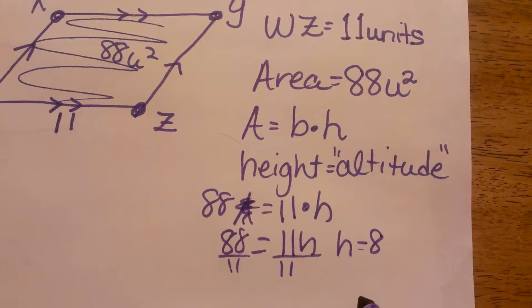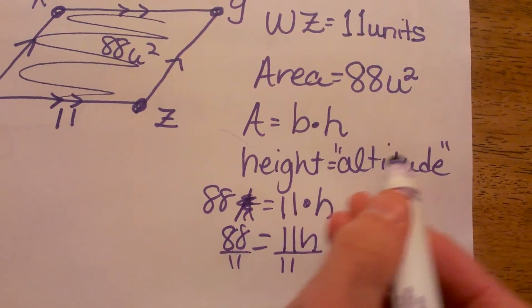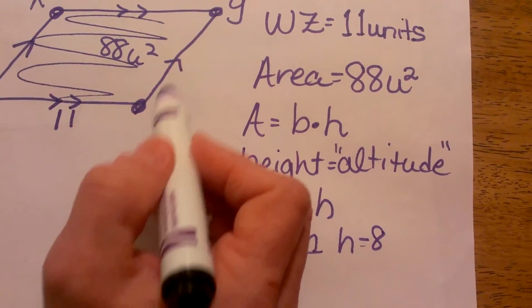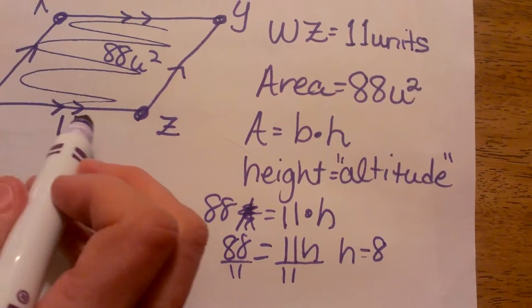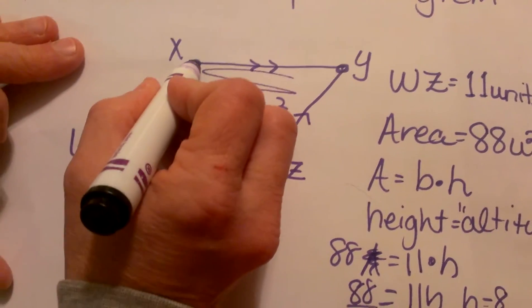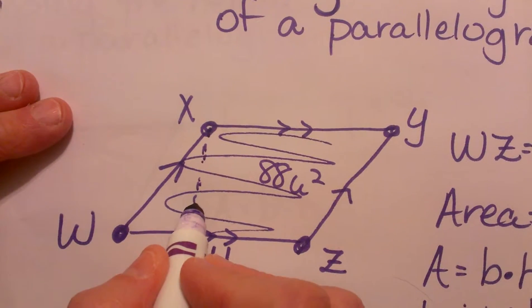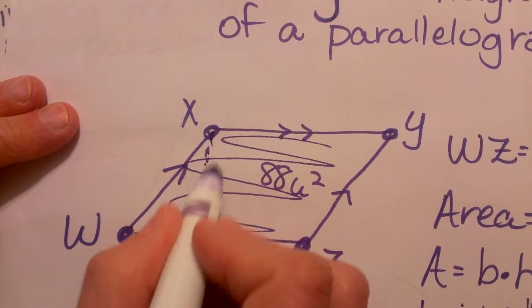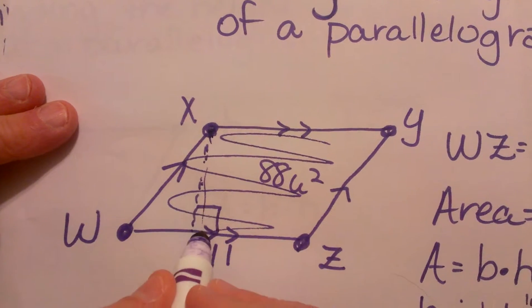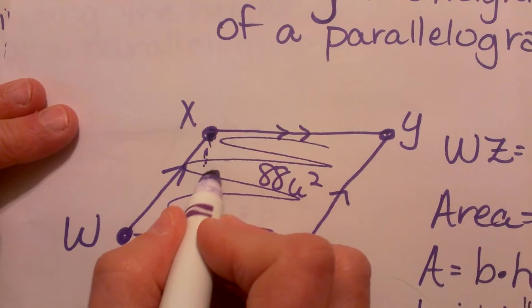Now where am I going to label that? In a parallelogram, the height is not the side of the parallelogram, it's the actual altitude. So I'm going to draw down from X straight down to the opposite base, an altitude, which is like how high you are above the ground in an airplane. And that is 8.